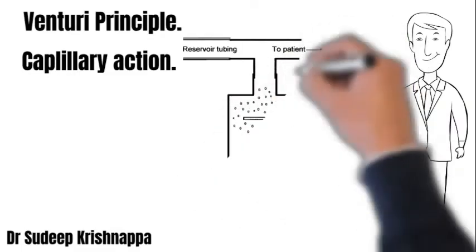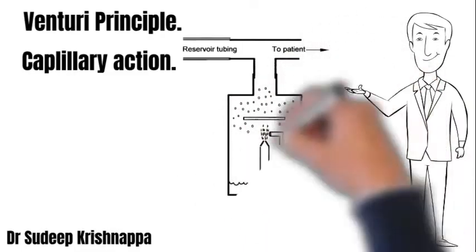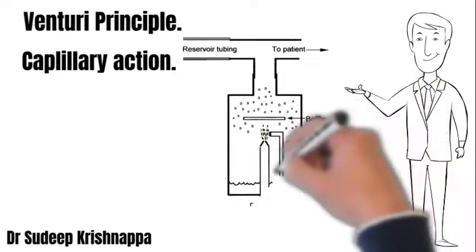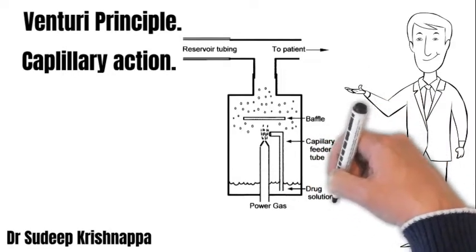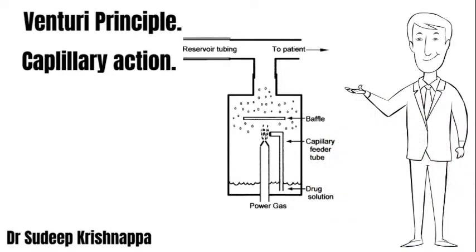We have the oxygen or compressed gas which is led into the chamber by a tubing present at the bottom. At the upper end of this tubing there is an orifice which increases the velocity, thereby producing the Venturi effect. As a result of this, a subatmospheric pressure is generated. Adjacent to this is a capillary tube, the lower end of which is immersed in the solution contained in the chamber and the upper end is closer to the orifice.